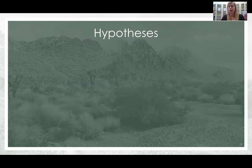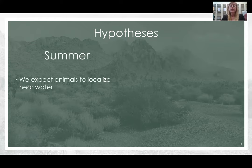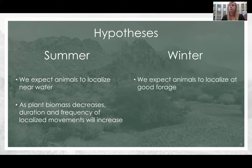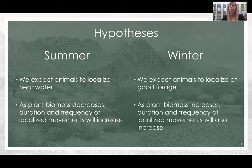We have broken up our hypotheses based on these two biological seasons. During the summer, we expect that animals will have to localize near water, and therefore as plant biomass decreases, duration and frequency of localized movements will increase. In the winter, we expect that animals will want to localize at good forage areas, and so as plant biomass increases, duration and frequency of localized movements will also increase.